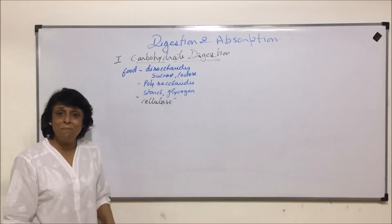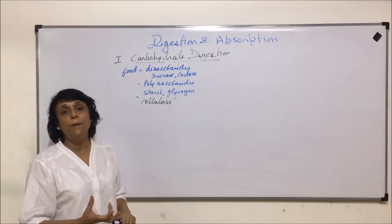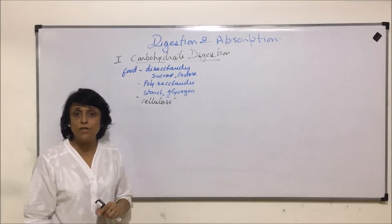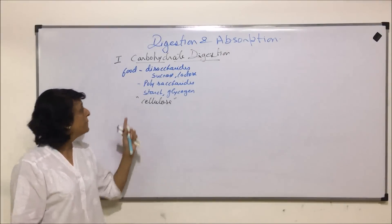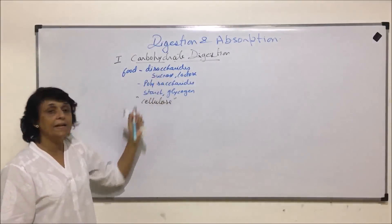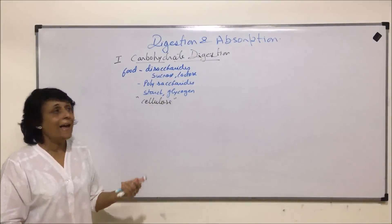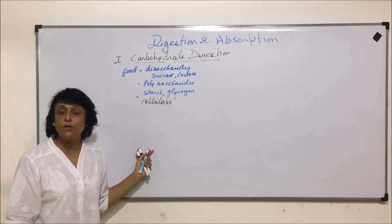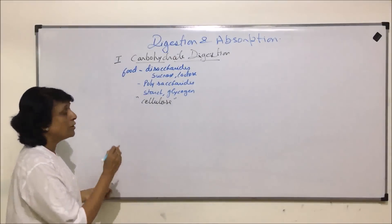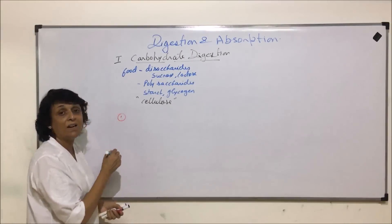Digestion basically means the breakdown of complex organic molecules into simpler substances which can be absorbed. So glucose need not be digested, but disaccharides and polysaccharides would be digested. We will study this process of digestion according to location. The first place where food goes is the buccal cavity.